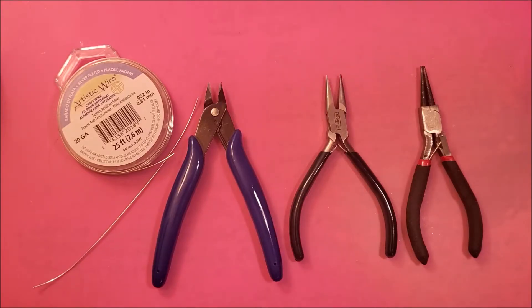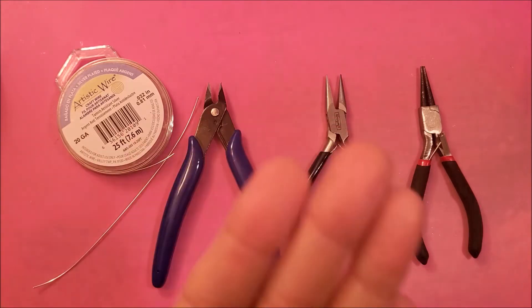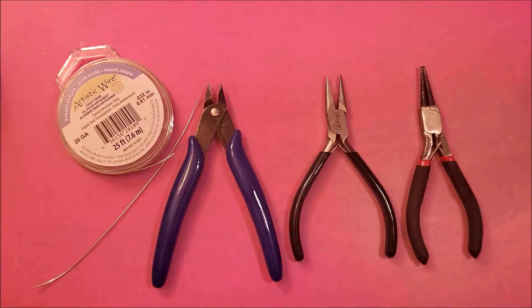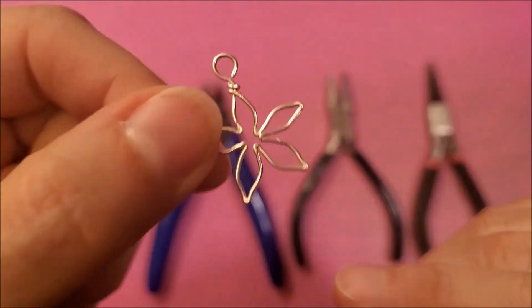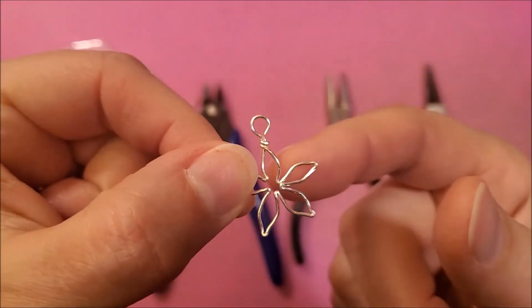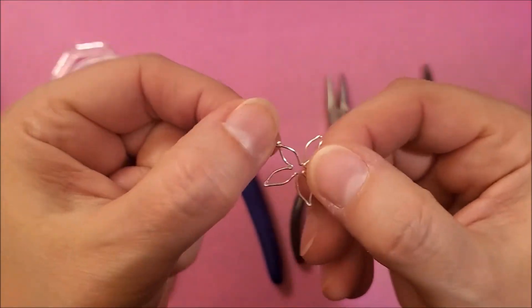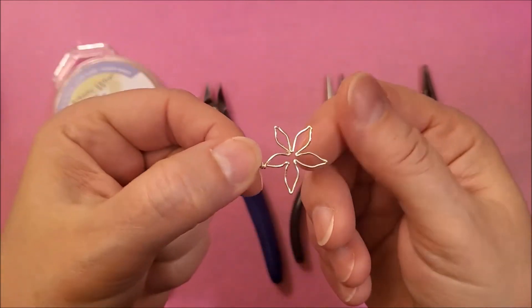Hello everyone, today I'd like to show you how to make some cute little flowers. There's two ways of doing it and here is one where it has a loop at the top so you can make little dangle earrings.